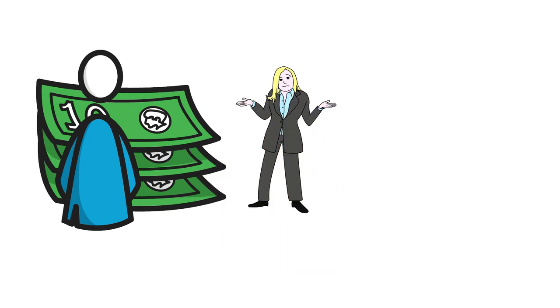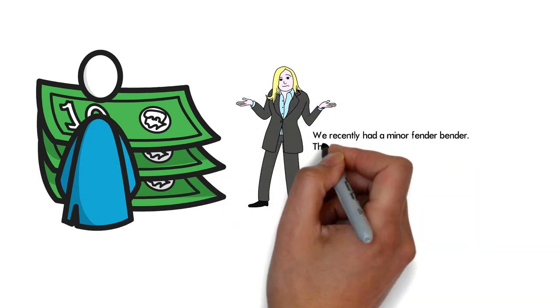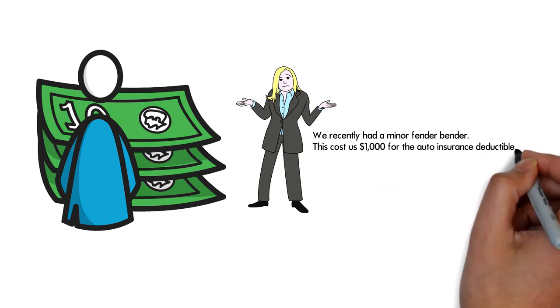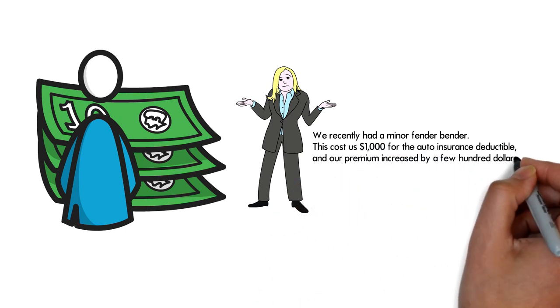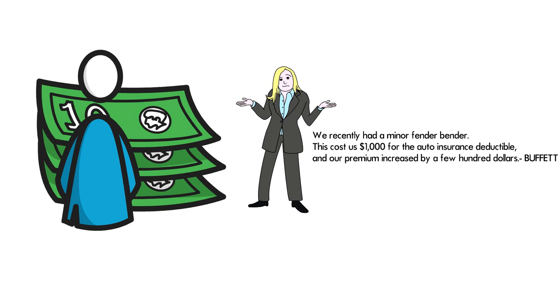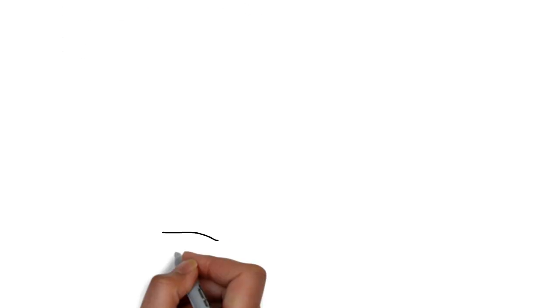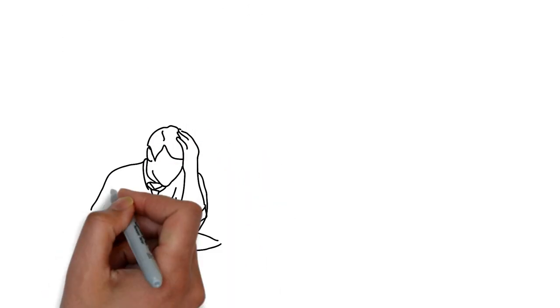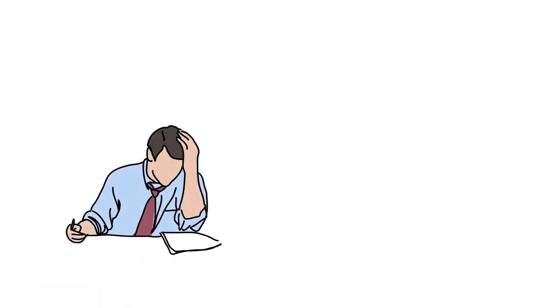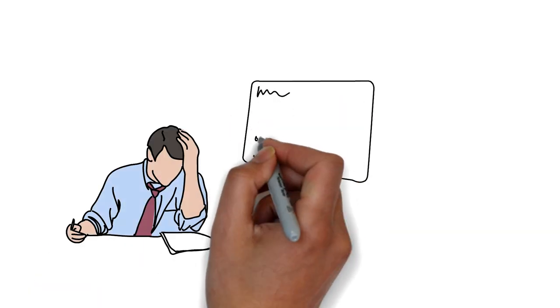Emergencies occur to everyone. We recently had a minor fender bender. This cost us $1,000 for the auto insurance deductible and our premium increased by a few hundred dollars. If you don't have enough emergency savings, when an unexpected bill comes up, you may be forced to incur credit card debt to cover the expense.